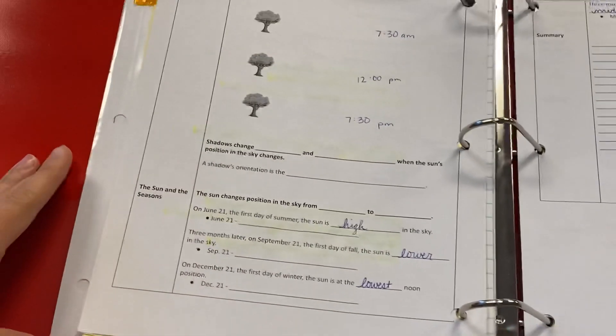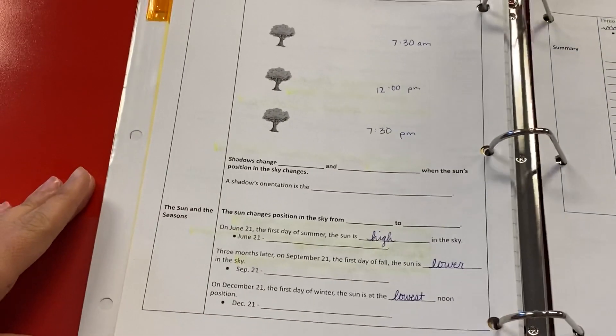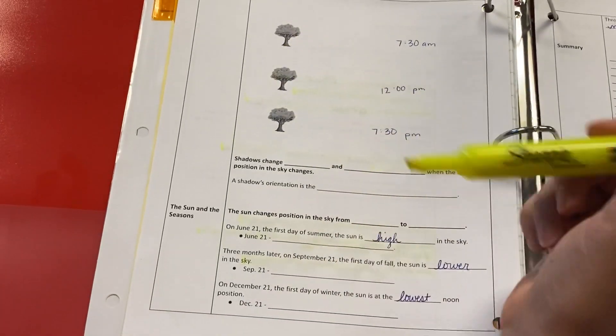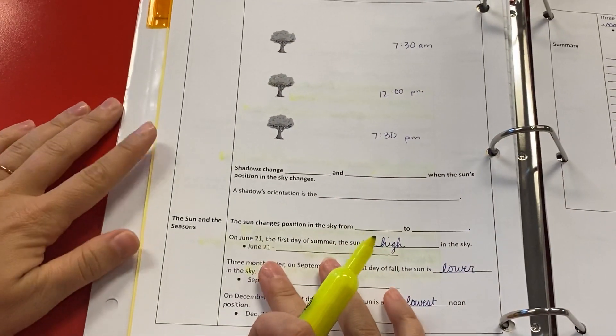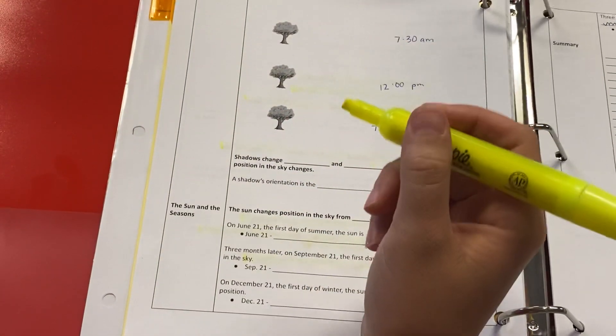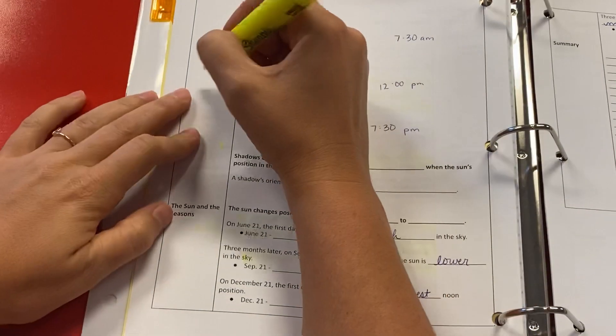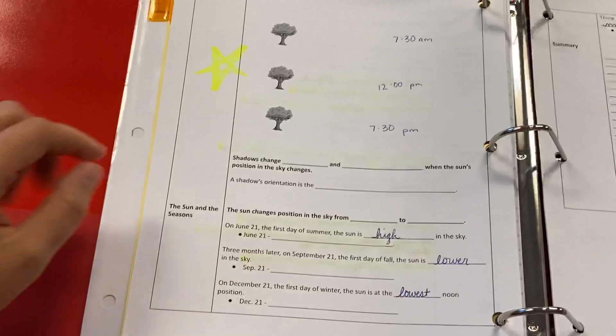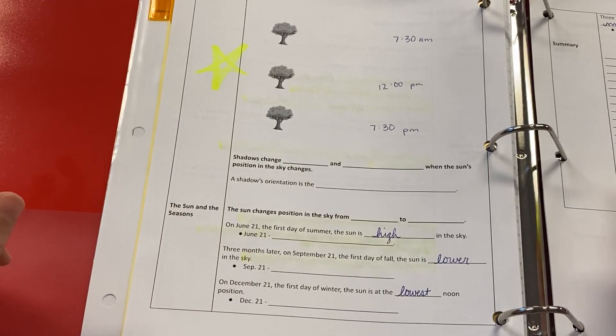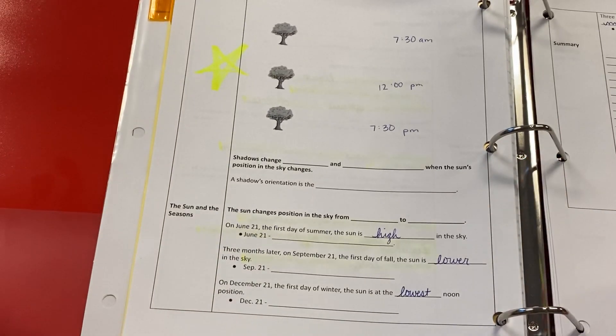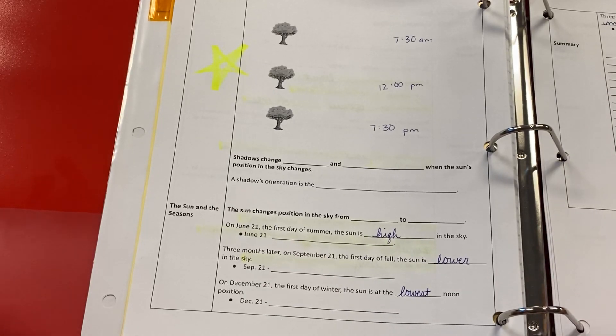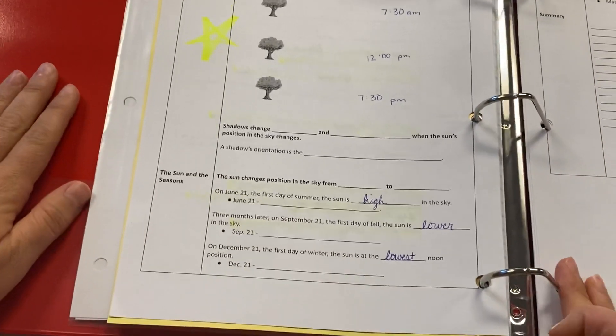On the back side of those notes, this is where we had the notes filled out for the little diagram here where I gave you the times of day and you had to draw the shadow. You are going to have something similar like that on the quiz. So just make sure you understand this section. If I were to give you this exact same question, you should be able to give me a very similar answer. Also, you need to know the position of the sun in relation to the seasons.